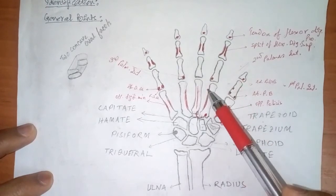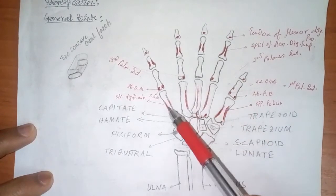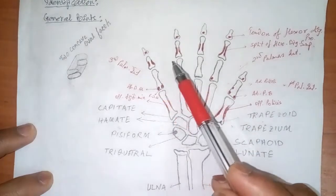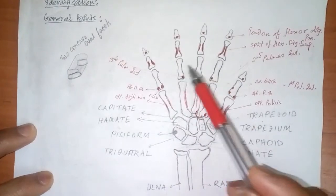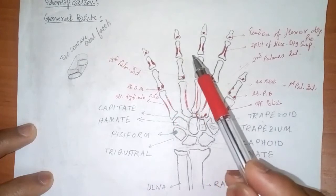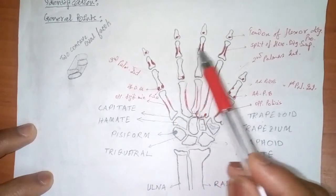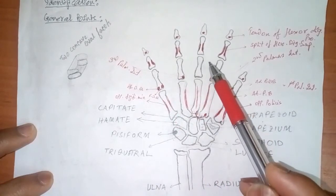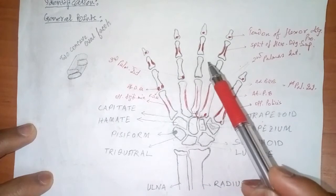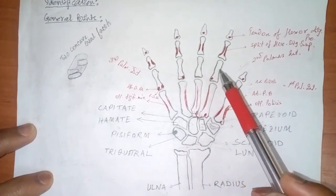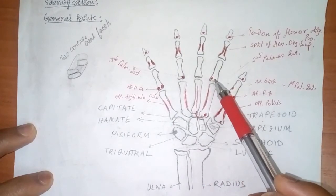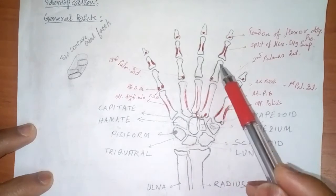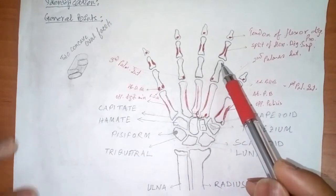As we did in the case of metacarpals, the same applies to the phalanges. In the case of the phalanges, it has 3 important landmarks — 3 important parts: a base right over here, a shaft this one, and the head.